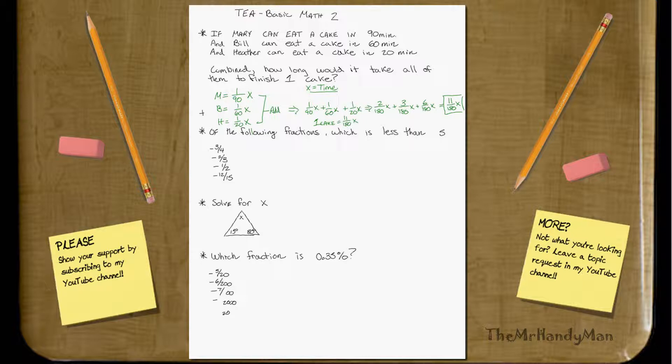Well, I'm getting near the edge here. So basically, we want to know that one cake equals 11 over 180X. Basically, you multiply the 180 on both sides, and you divide the 11 on both sides. So basically, solve for X, right?